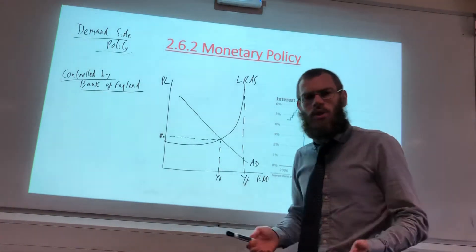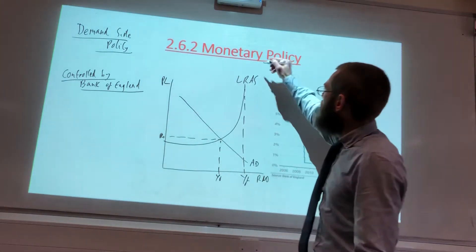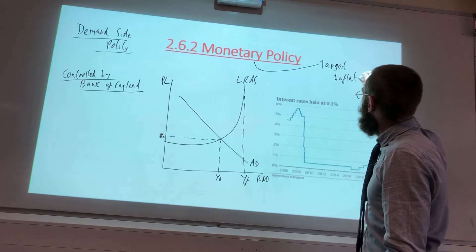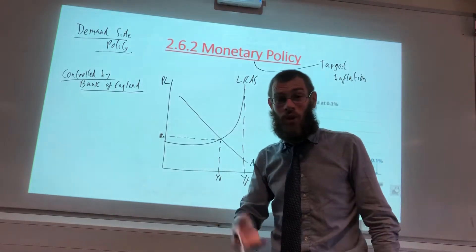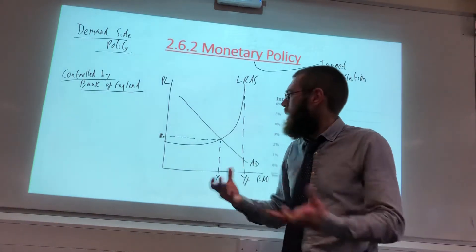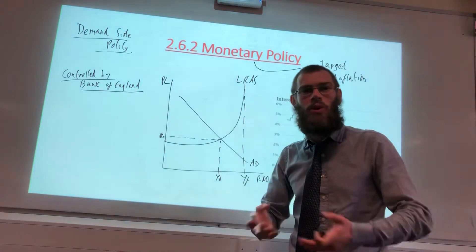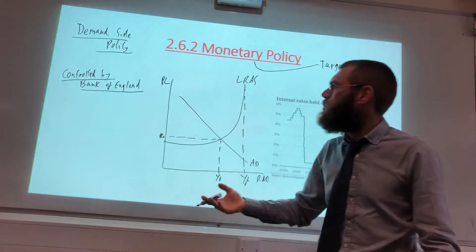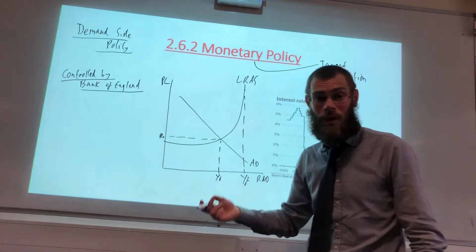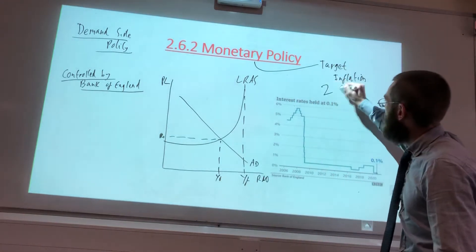So what are we concerned with in monetary policy? Well, the first thing to be aware of is that monetary policy has a target of inflation. Up until 1997 the government controlled monetary policy, but in 1997 the Bank of England — which you can see up here — was made independent of the government, although they are linked to the government. They were given the target of controlling inflation, one of the macroeconomic objectives: low and stable inflation. The target is two percent.